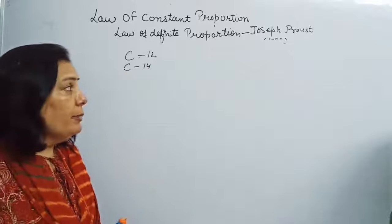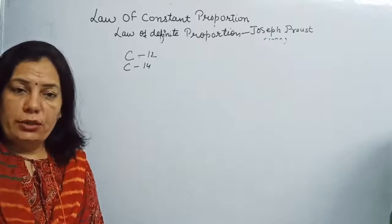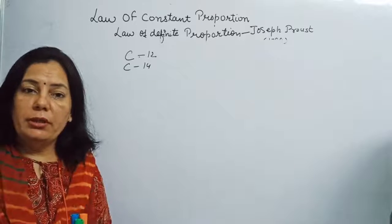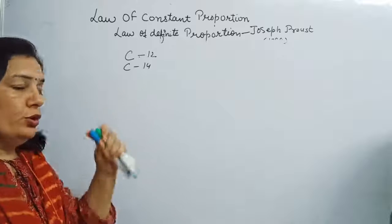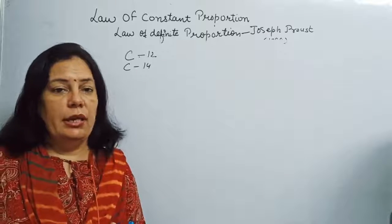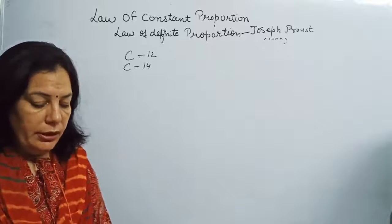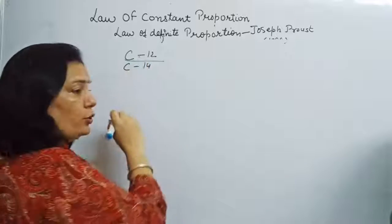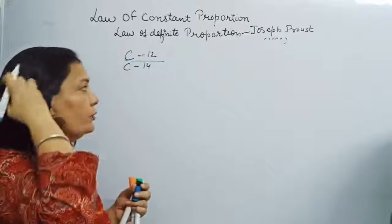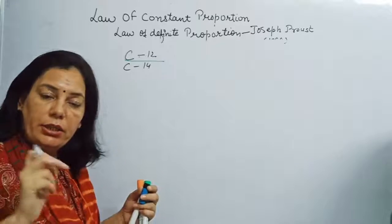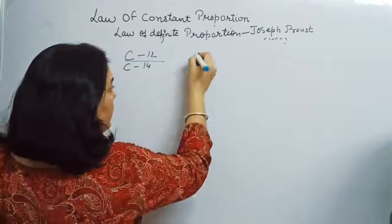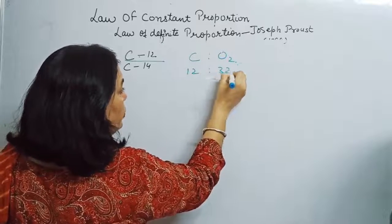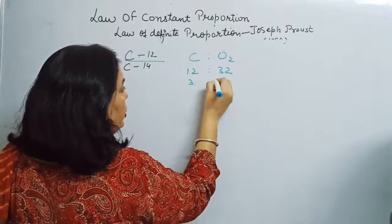Joseph Proust did not specify that only the C-12 isotope of carbon would react to form carbon dioxide. It is also possible that the C-14 isotopic form reacts with oxygen. If C-12 carbon reacts with oxygen, the mass ratio of carbon to oxygen is 12:32, which simplifies to 3:8.